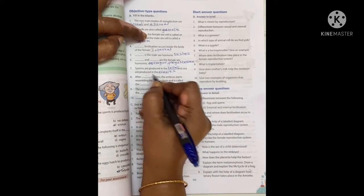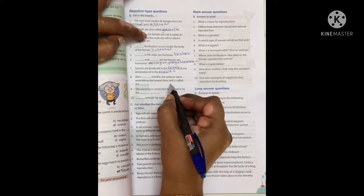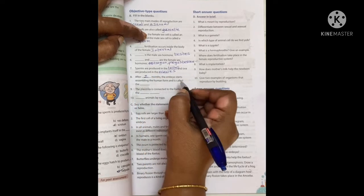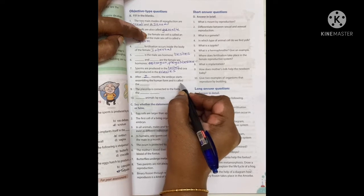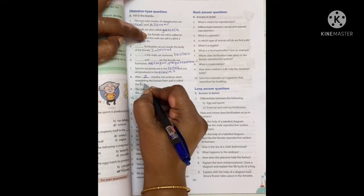After two months, the embryo starts resembling the human form and it is called the fetus.